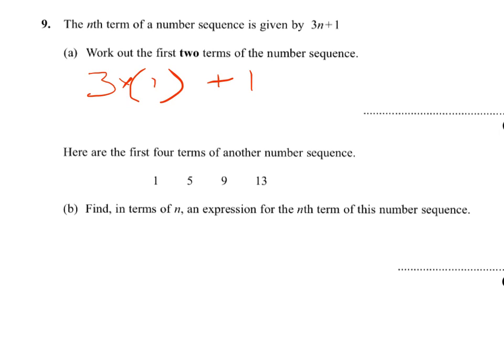3 times 1 plus 1. So 3 times 1 is 3, and 1 is 4. So that's your first term. Your second term will be 3 times 2, 2 standing for the second term, plus 1. 3 times 2 is 6, and 1 is 7. So your first two terms are 4 and 7.